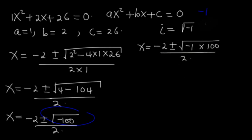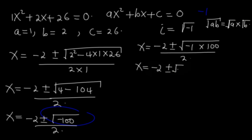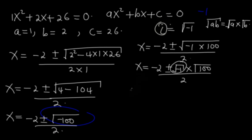Now, from the rule of surds, if I have √(A × B), I can separate this as √A × √B. Therefore, x = (−2 ± √(−1) × √100) / 2. We agreed that √(−1) = i, so we have x = (−2 ± 10i) / 2.